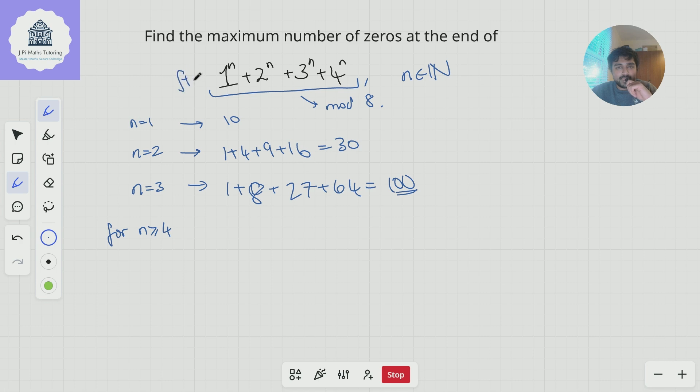Let me call this expression f(n). So f(n) is congruent to... well, 1^n is just 1. Now for 2^n, when n ≥ 4, I can write 2^n as 16 × 2^(n-4).